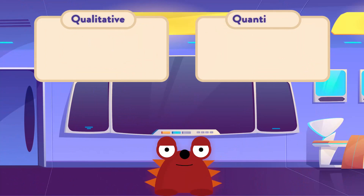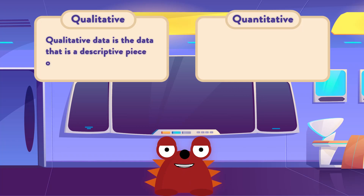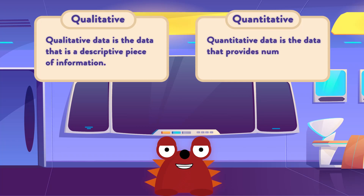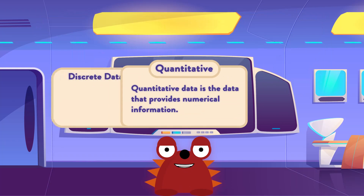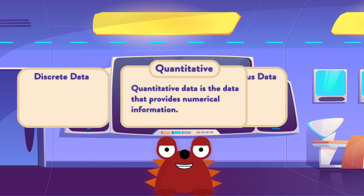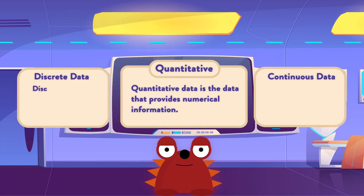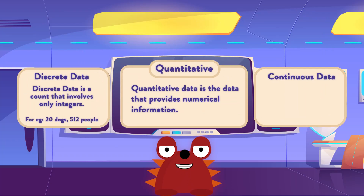Now data can be of two types: qualitative and quantitative. Qualitative data is the data that is a descriptive piece of information, whereas quantitative data is the data that provides numerical information. Quantitative data can be further divided into discrete and continuous data. Discrete data is a count that involves only integers, meaning something that is usually counted.